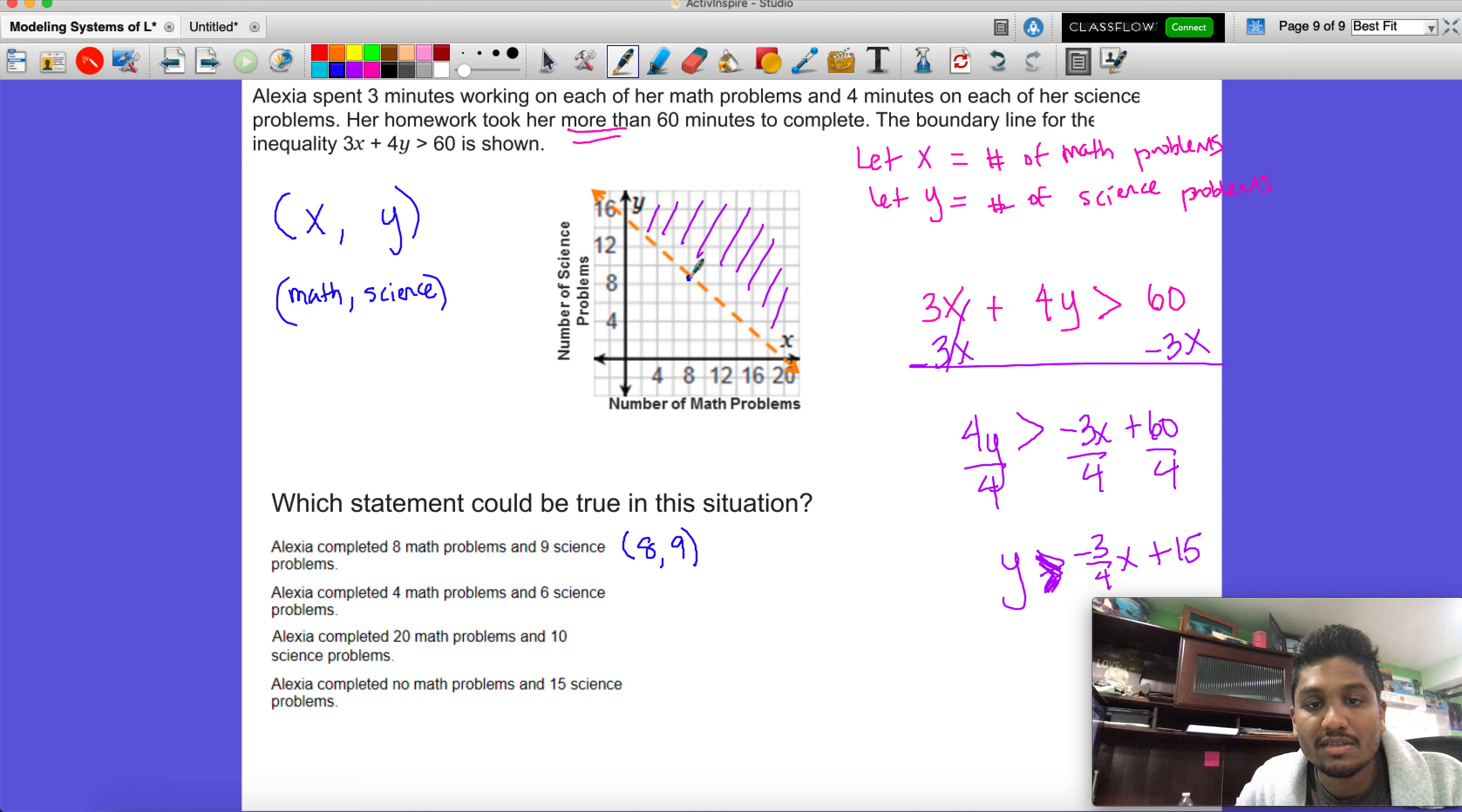Alexa completed four math problems and six science, so four and six brings us here - that's a definite no. Twenty math problems and 10 science problems, so 20 and 10 brings us around here - that's a yes. Then she did no math problems, so zero, but 15 science problems. Zero and 15 brings us on this line. On the line, if it's on the line, not a solution.